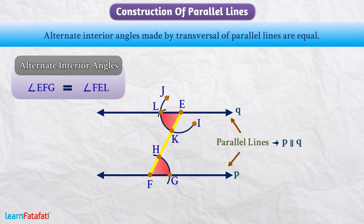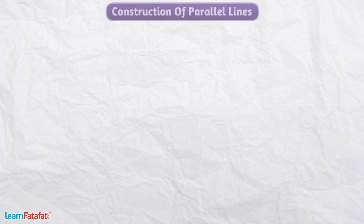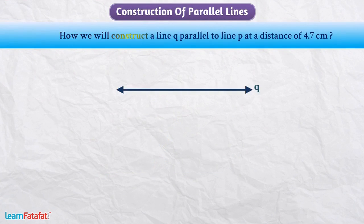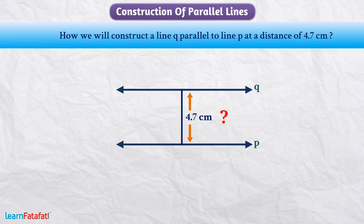I think you have understood it very well. So, can you tell me how we will construct a line Q parallel to line P at a distance of 4.7 cm? Think about it.